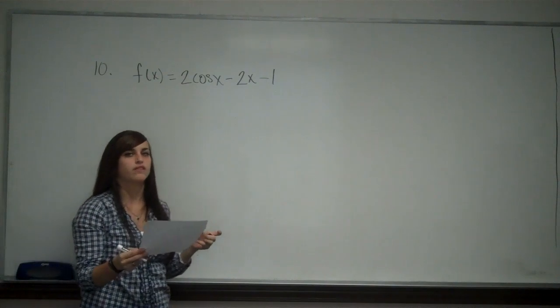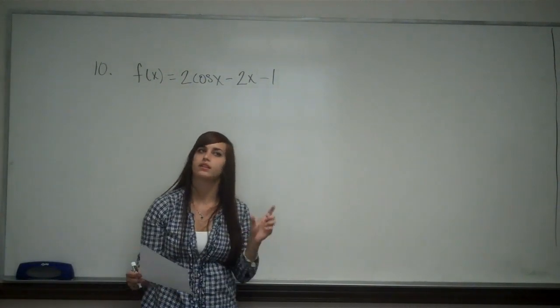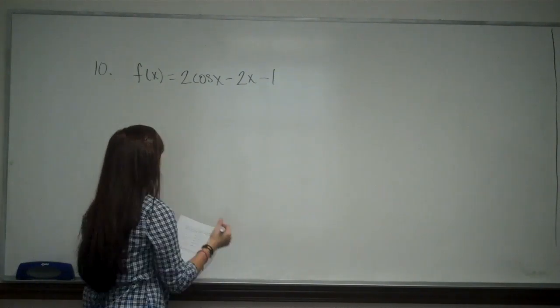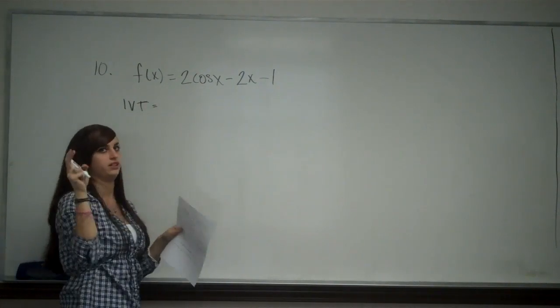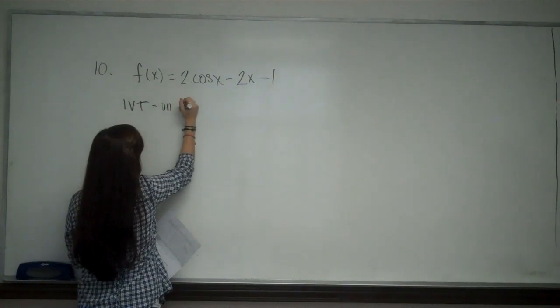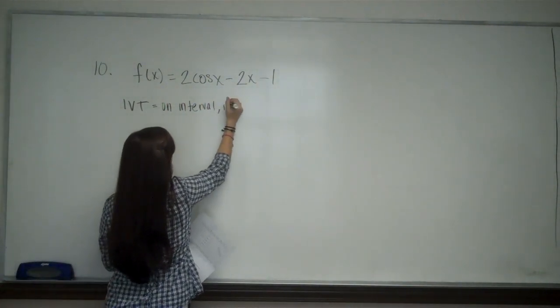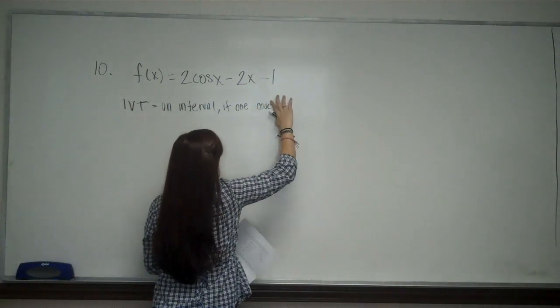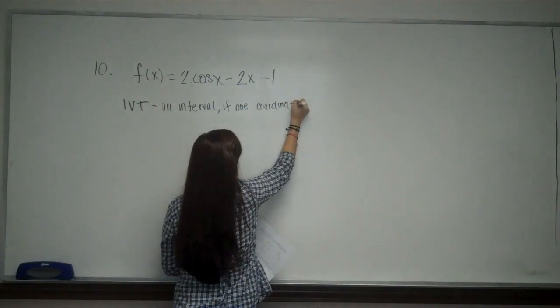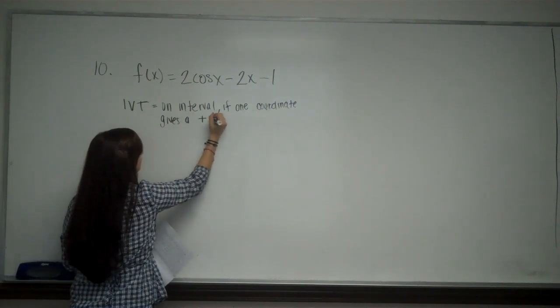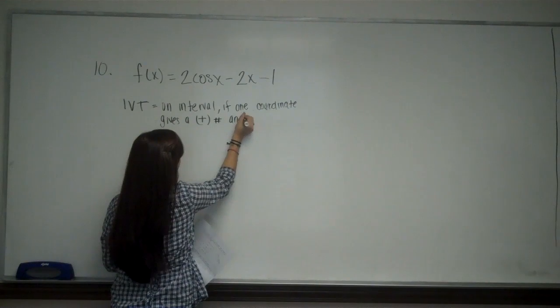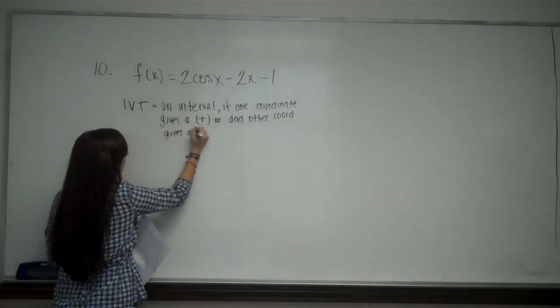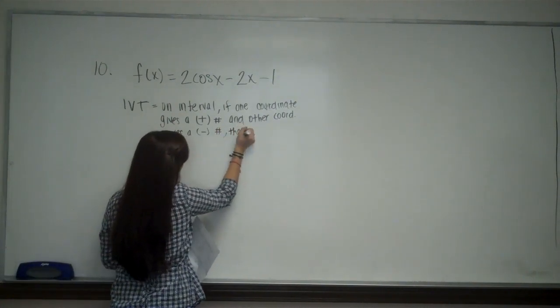Must have a zero on which of the following intervals. So the intermediate value test tells us that if we plug in two numbers in the interval and one gives us a positive and the other gives us a negative, then there must be a zero in there. So we are going to use, just to sum it up, this isn't the official theorem but this is a summary. So pretty much on the interval, if one end point or coordinate gives a positive number and the other coordinate gives a negative number, then there is a zero.